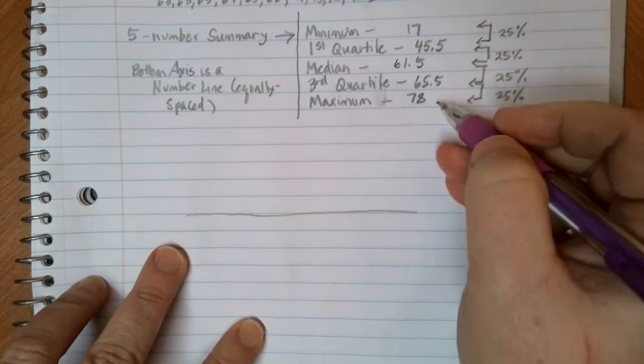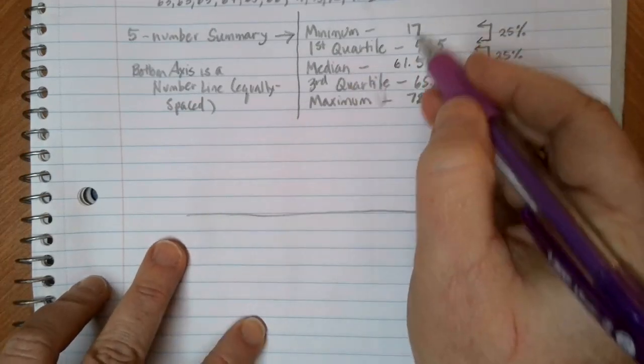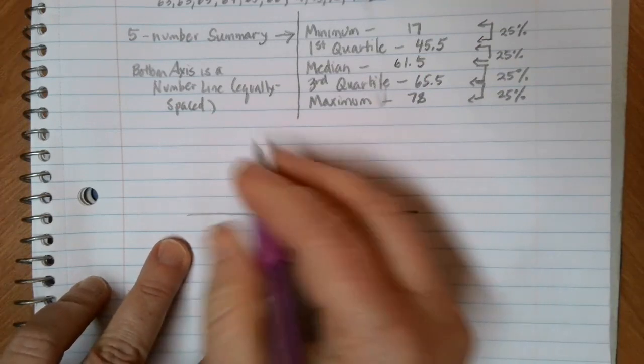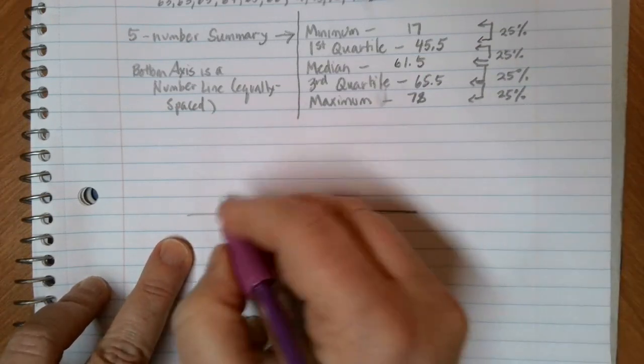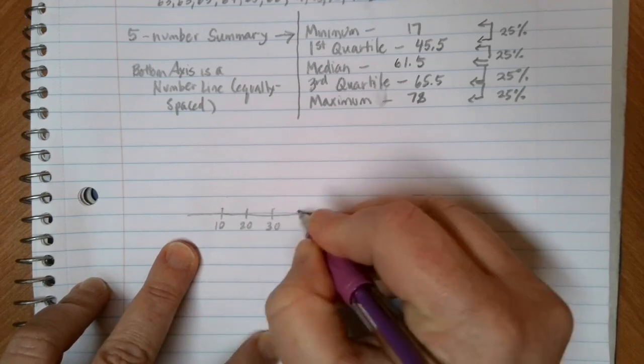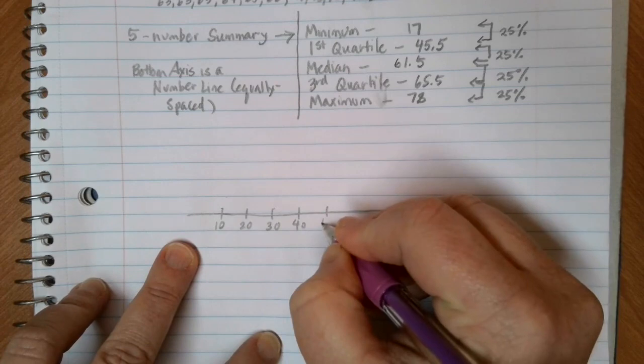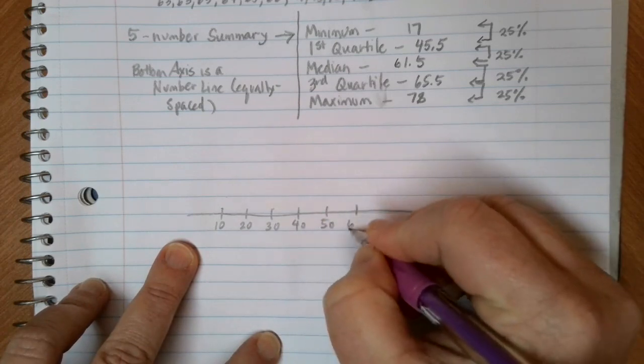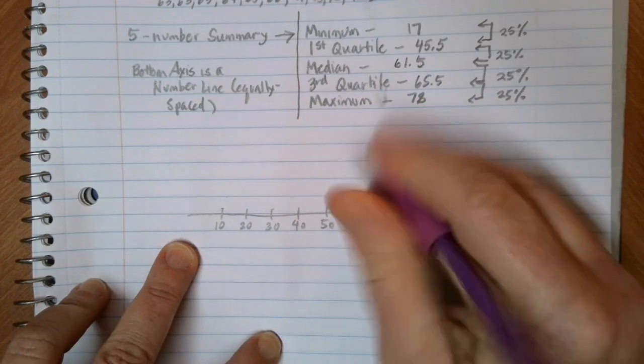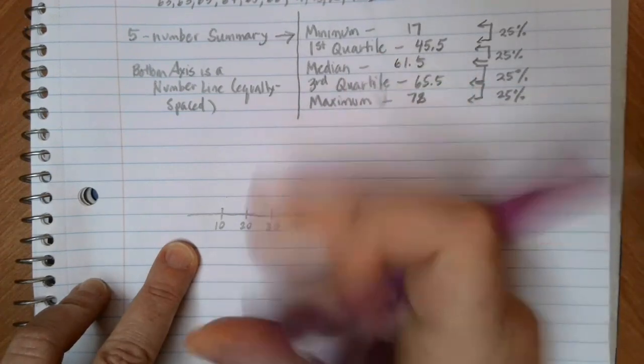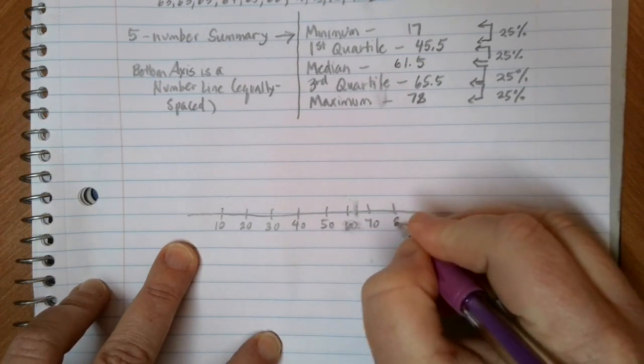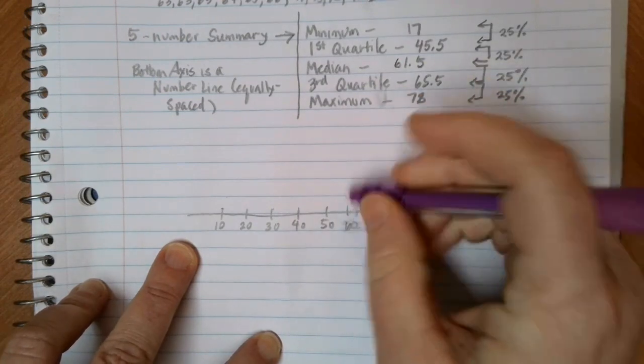As I'm going through my number line, I need to make sure that I get up to, that I at least have covered here between 17 and 78. We do want it to be equally spaced and labeled, so let's just count by 10. It's kind of like we did with the histogram. 10, 20, 30, 40, 50, 60, as equally spaced as we can.